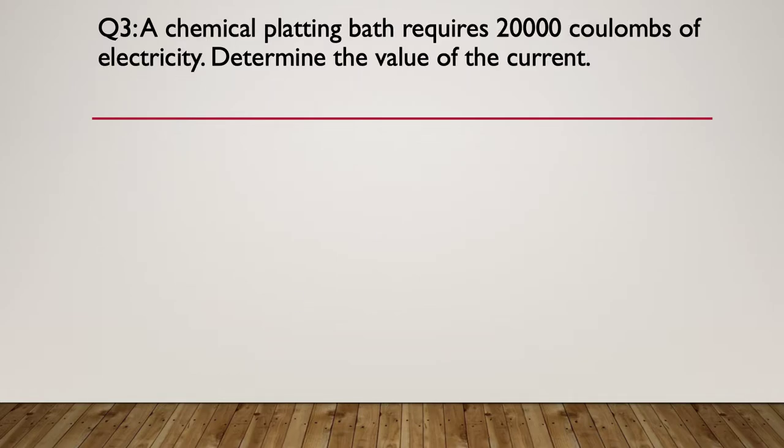Question three. A chemical plating bath requires 20,000 coulombs of electricity. Determine the value of the current. So pause here and have a go at this one. So here's our hint. Determine the equation and you're going to have to transpose it for current. So pause again here if you need to.